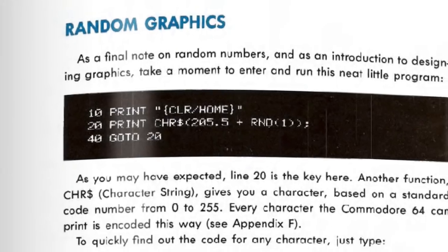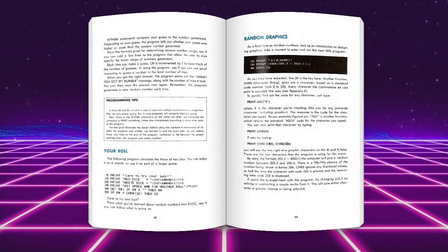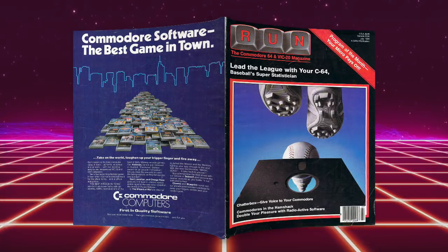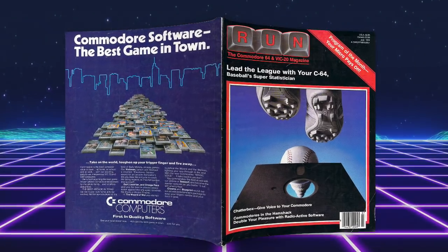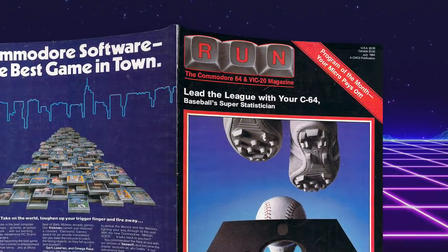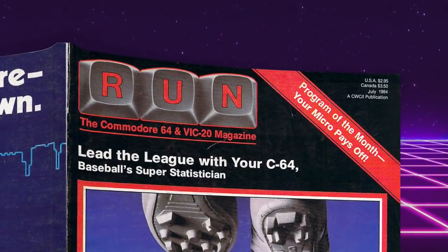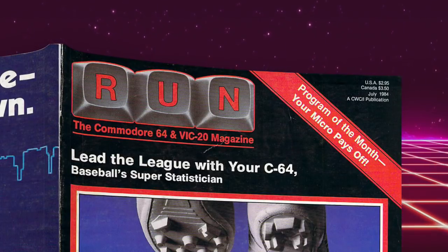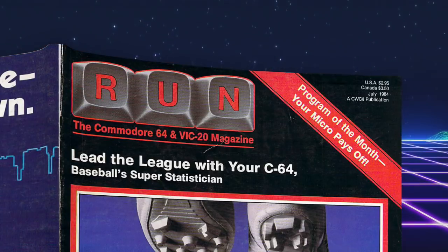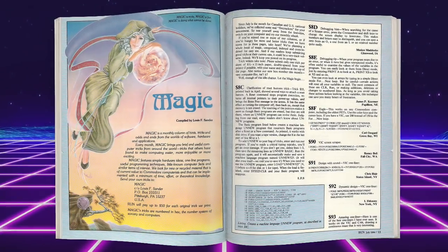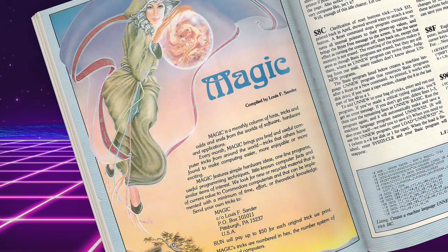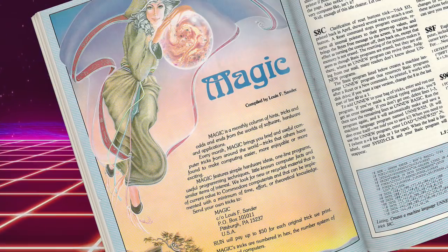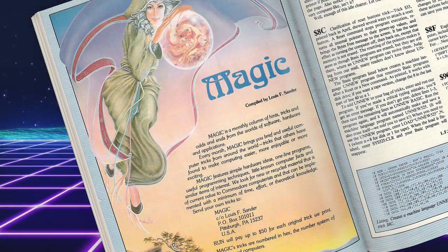The one-line version first appeared in a magazine — RUN Computer Magazine, really a magazine for Commodore 64 and VIC-20 users. At that time there was no Stack Overflow, no Google search — everything was either magazines, bulletin board systems, or one of the few available books. RUN Magazine had a column called 'Magic,' run by a guy named Lewis Sander. It was a set of tips and tricks that people would send in, and they'd pay you up to $50 for your tip — which wasn't too bad for 1984.